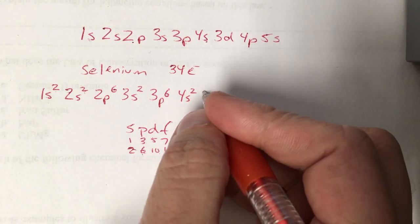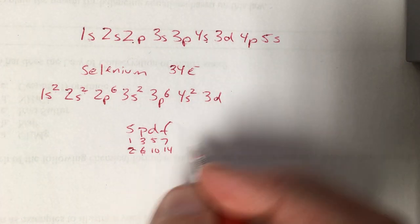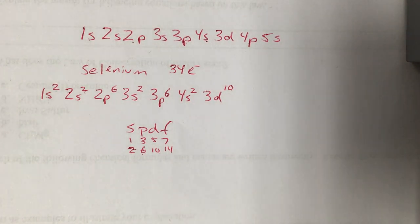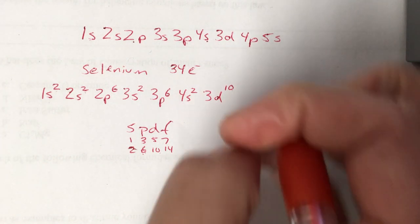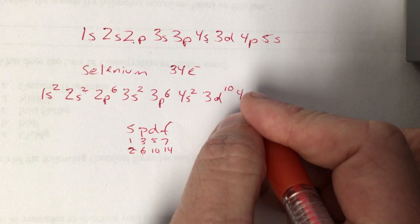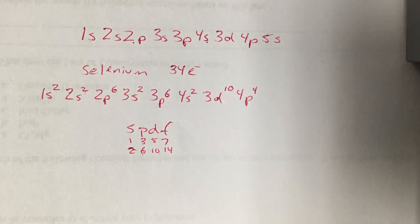So 3d is next. And d's hold 10. So that's 10 of our 14. We only have 4 left. 4p is the next orbital. And we can stick them all right in there. So that's the electron configuration for selenium.